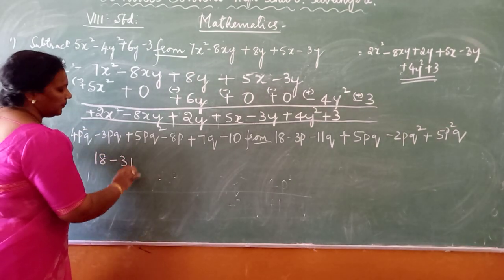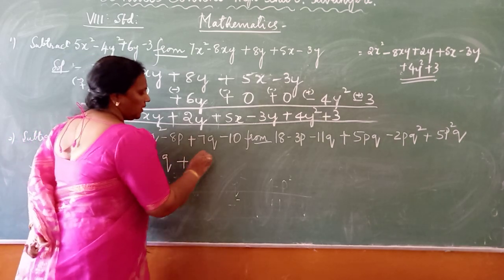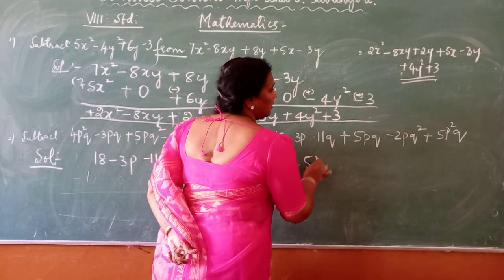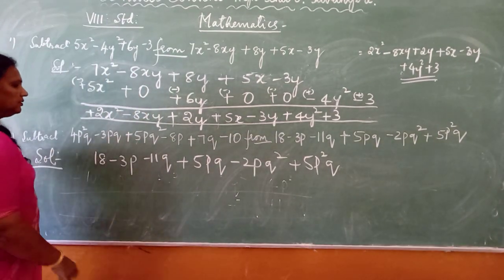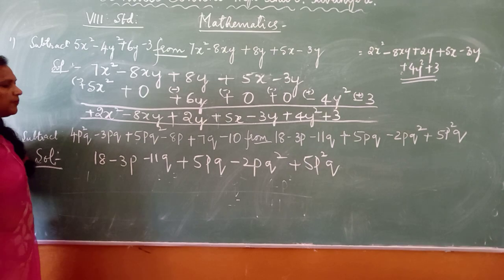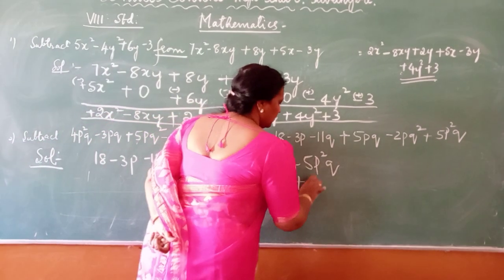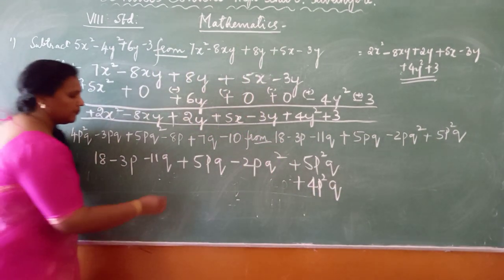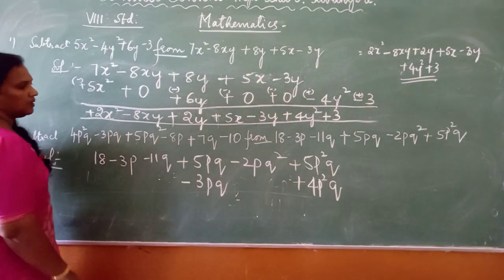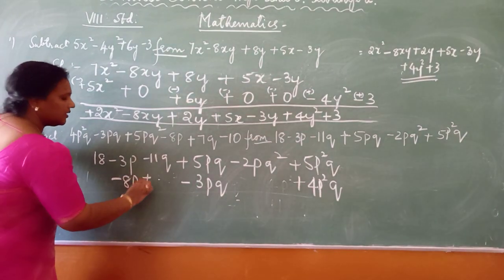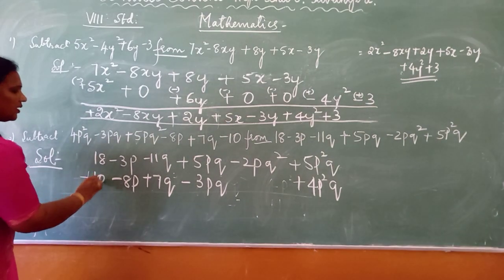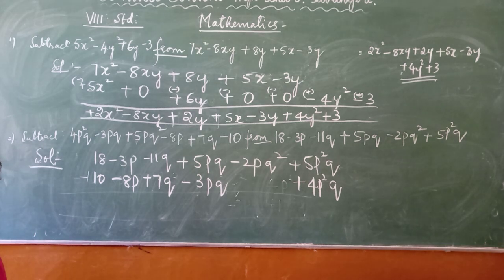18 minus 3p plus 5p squared minus 2p squared plus 5p. Then 4p squared. Then 4p. Then minus 8p plus 7p. Then minus 3p. Plus 5.